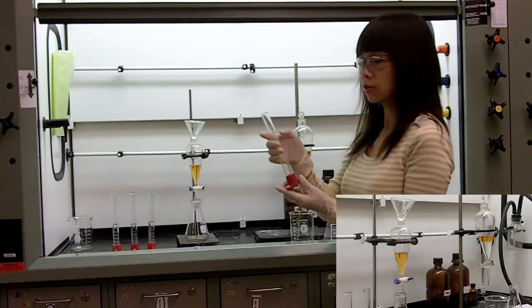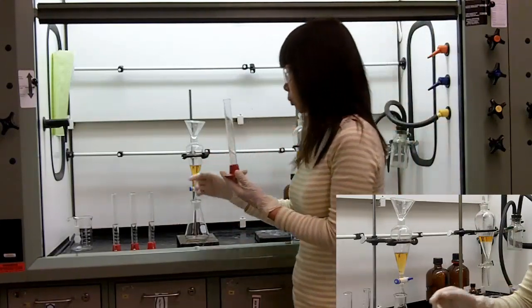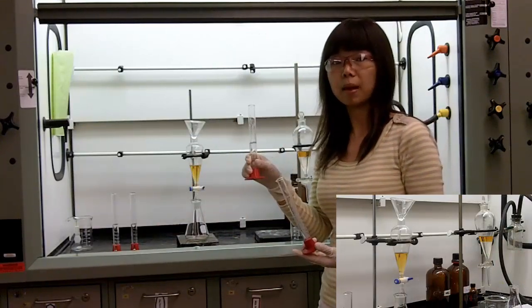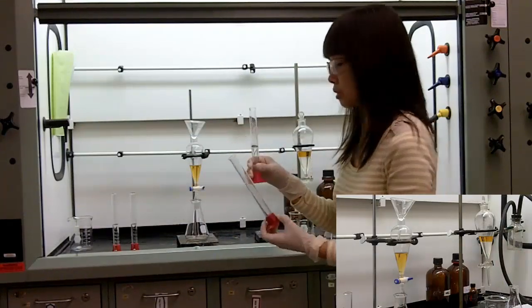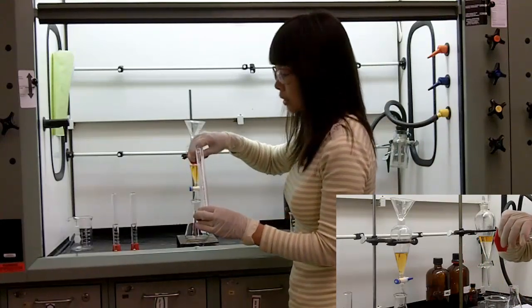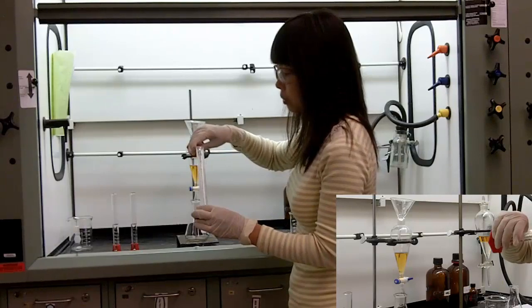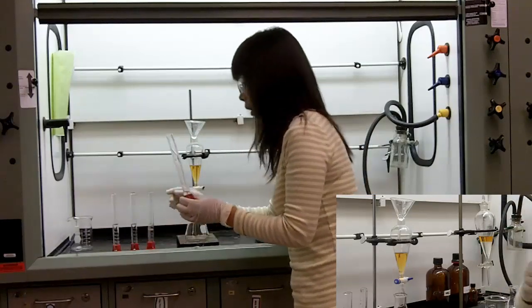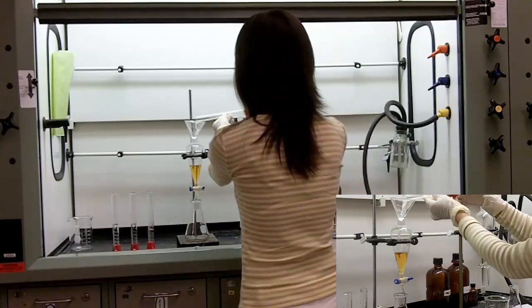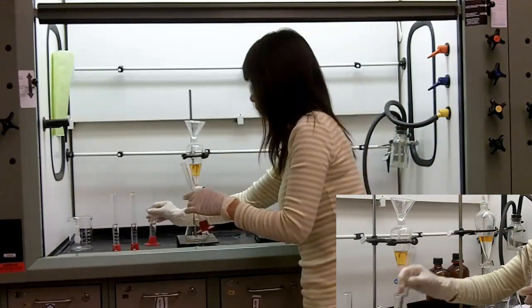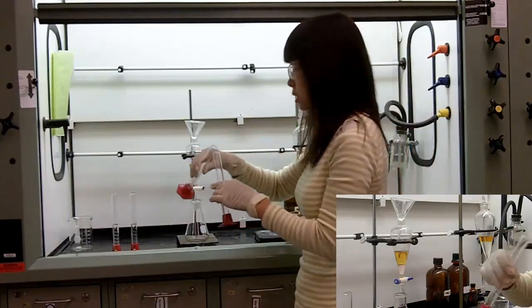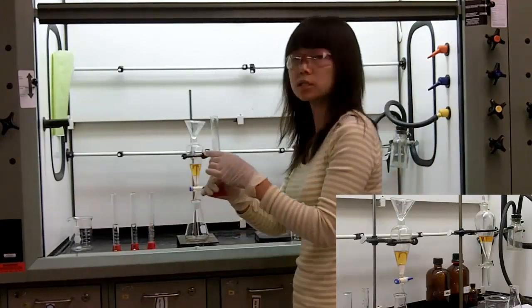The aqueous layer is about 25 milliliters. We are going to use three portions of 15 ml methylene chloride to do the extraction. Put a little bit of methylene chloride in the glassware containing your compound, rinse it, and then put the rinsings into the separatory funnel. You can rinse it three times to ensure you completely transfer your compound.